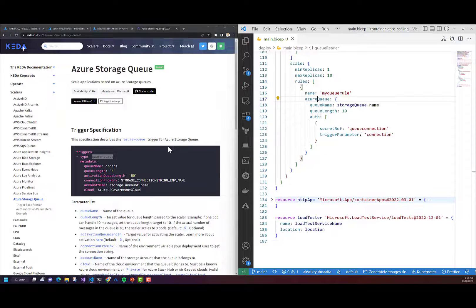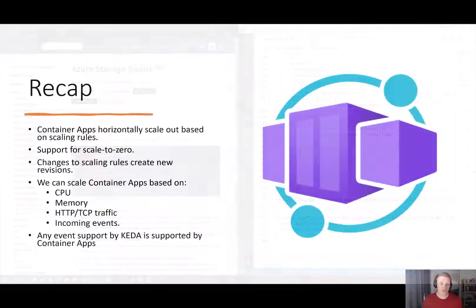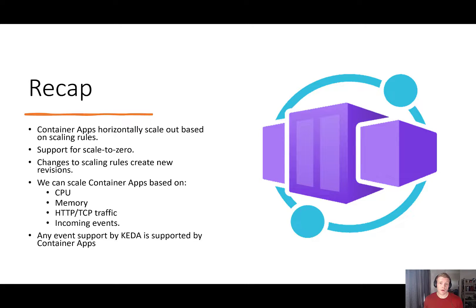Let's finish off by recapping what we've talked about. Container Apps manages automatic horizontal scaling through a set of declarative scaling rules. As our Container App scales out, new instances are created. With Azure Container Apps, we can scale our app to zero, which prevents our app from being charged for usage. We can also scale based on CPU or memory usage, HTTP and TCP traffic, and incoming events supported by KEDA. Remember that scaling rules apply to a particular revision, so if we change our scaling rules, new revisions of our Container App will be created.